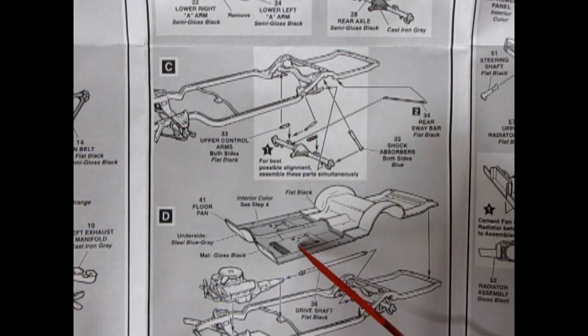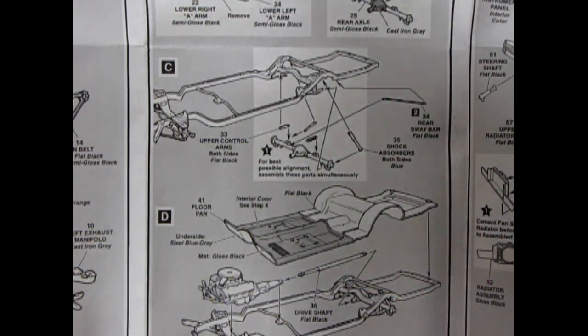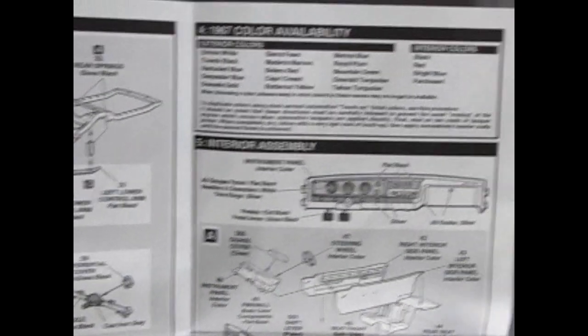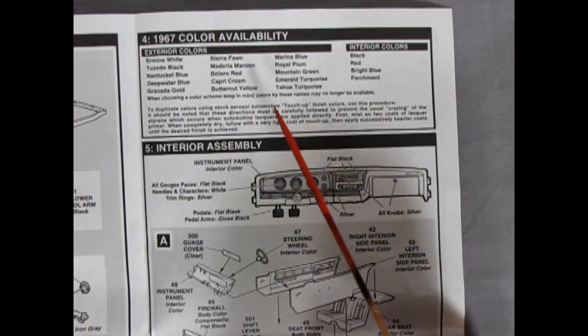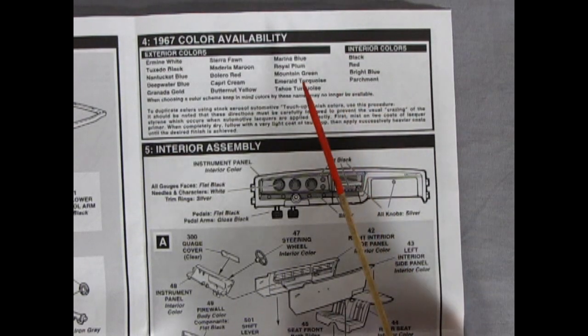You've got your frame and the differential and all that going in. You also have your floor pan here, your engine, the drive shaft, everything. Then here we get a nice chart. This is the color availability, the exterior colors and what would be painted on the interior.